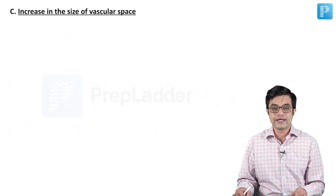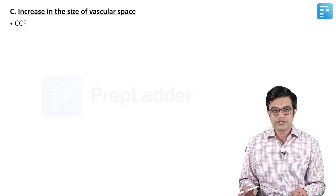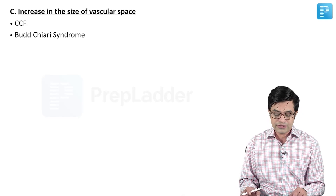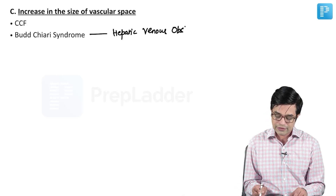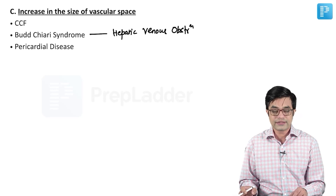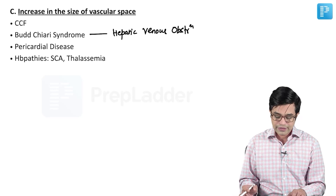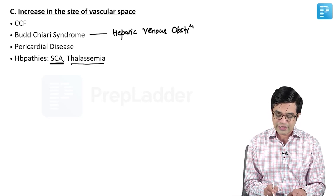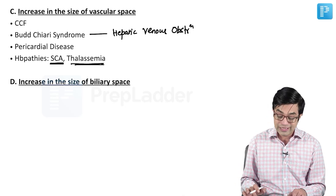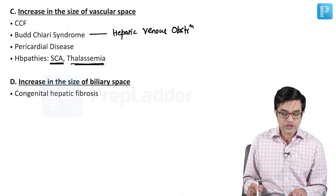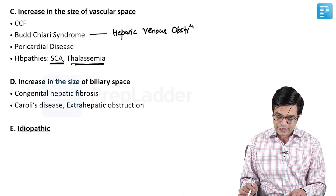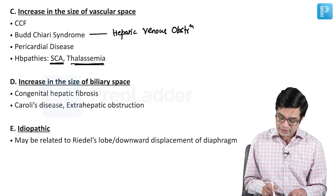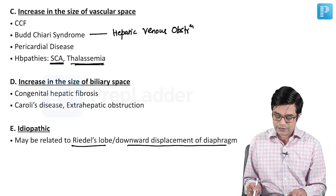Third is increase in the size of the vascular space, seen in congestive cardiac failure, Budd-Chiari syndrome — which is hepatic venous obstruction — pericardial diseases including cardiac tamponade, and hemoglobinopathies like sickle cell anemia and thalassemia. Fourth, there is increase in the size of the biliary space, seen in congenital hepatic fibrosis, Caroli's disease, and extrahepatic obstruction of the biliary tract.